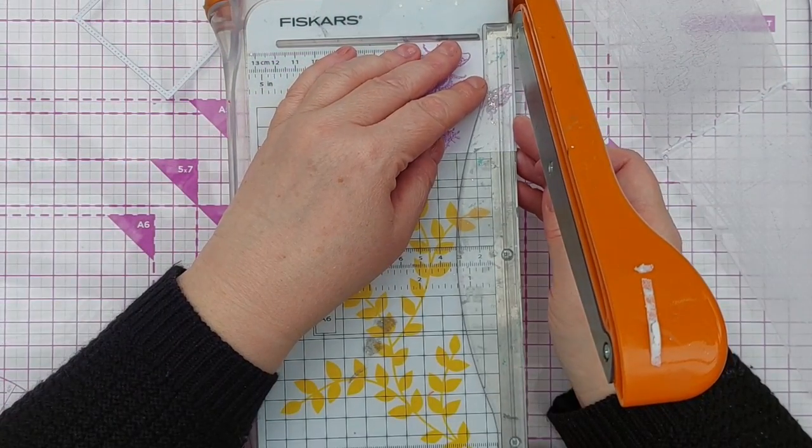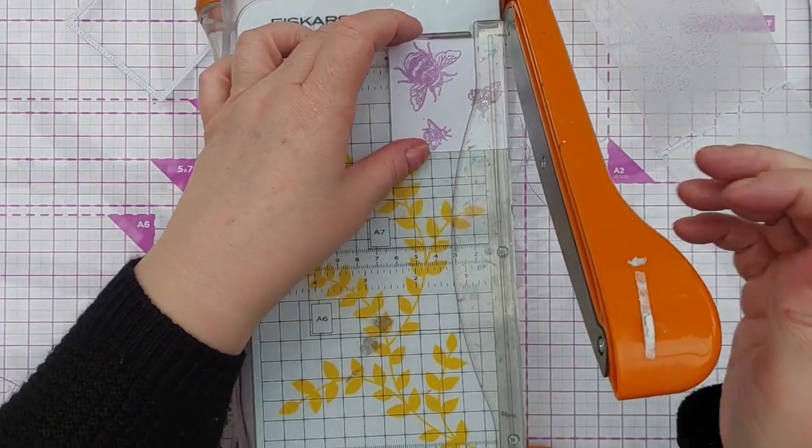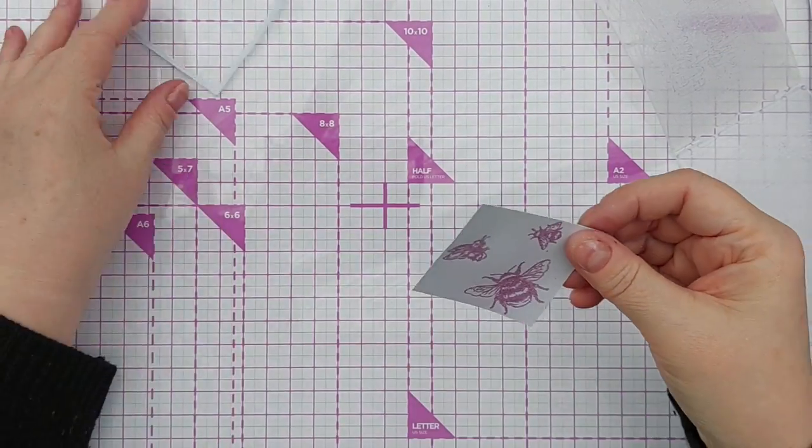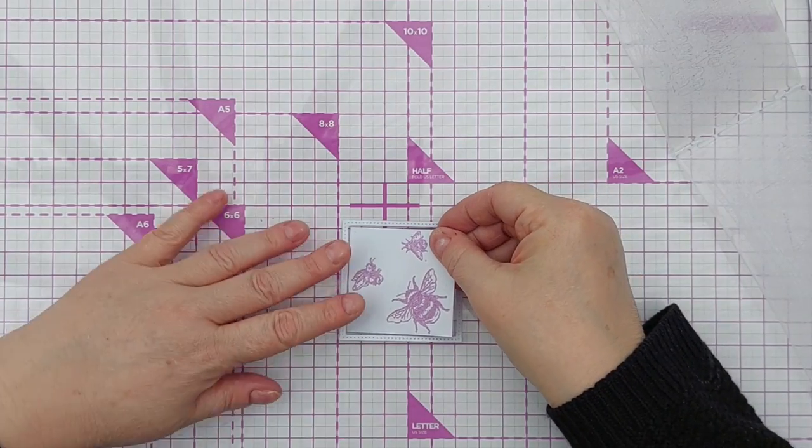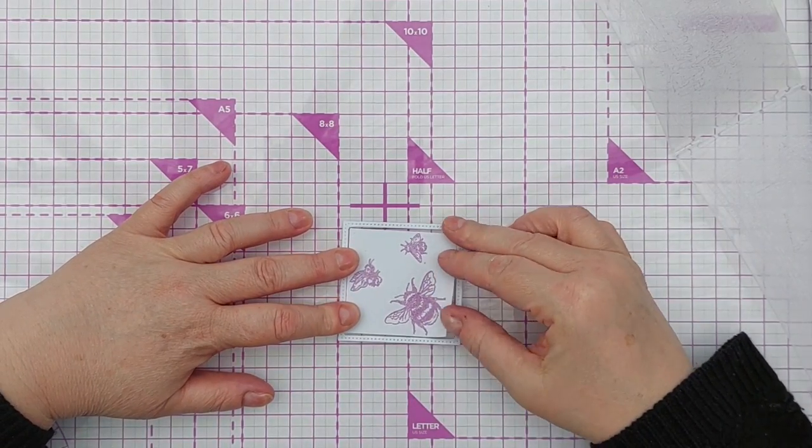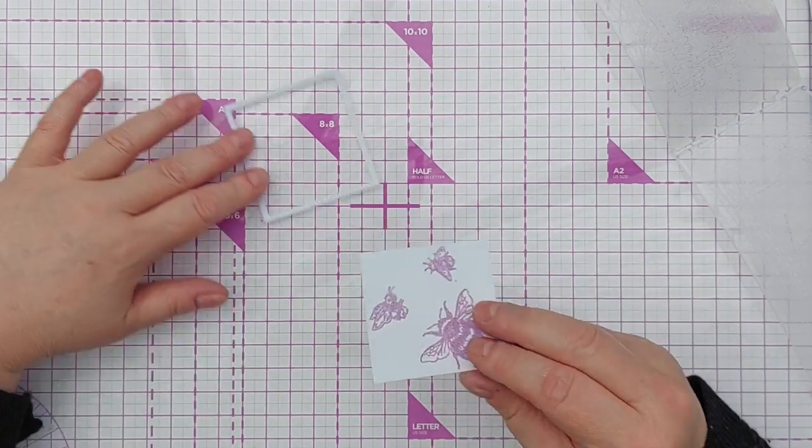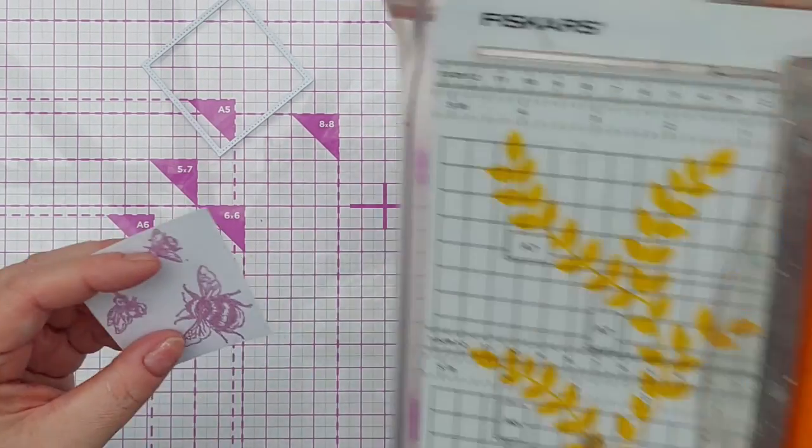What I'm doing now is trimming this square down so it's a bit smaller. Then when I pop it back in there, there'll be a small gap between the two.